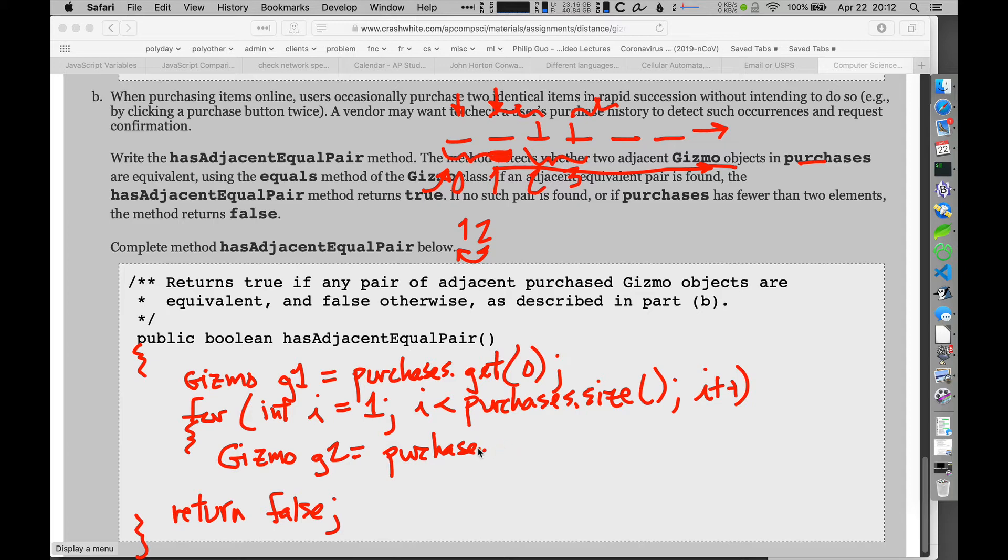Gizmo g2 is going to be whatever purchase I have at this I position. I'm trying to get this next one there, so that's going to be purchases dot get I. So if I'm at zero, I just got the first, or the one to index one. And now I'm ready to compare those, and what am I going to do? If g1, the one I saved here, that first one, dot equals g2.